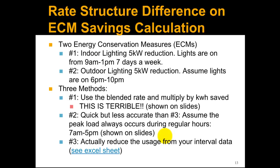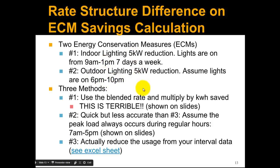Now we're going to look at two different energy conservation measures and how they calculate differently using different methods. The two measures are very similar: an indoor lighting change and an outdoor lighting change. The only thing we're going to change is the hours that we're reducing this 5 kilowatt of lighting. For the indoor we're changing from 9 a.m. to 1 p.m., and for the outdoor lighting from 6 p.m. to 10 p.m. — both a 4-hour change and a 5-kilowatt reduction, saving the same amount of energy in both ECMs.